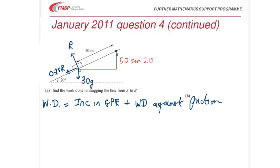Now, R, by resolving perpendicular to the plane, R will equal 30 G cos 20. So friction, which is mu R, 0.25 R, just using the calculator here, that comes to be 69.07. So, 69.07, that's the frictional force.